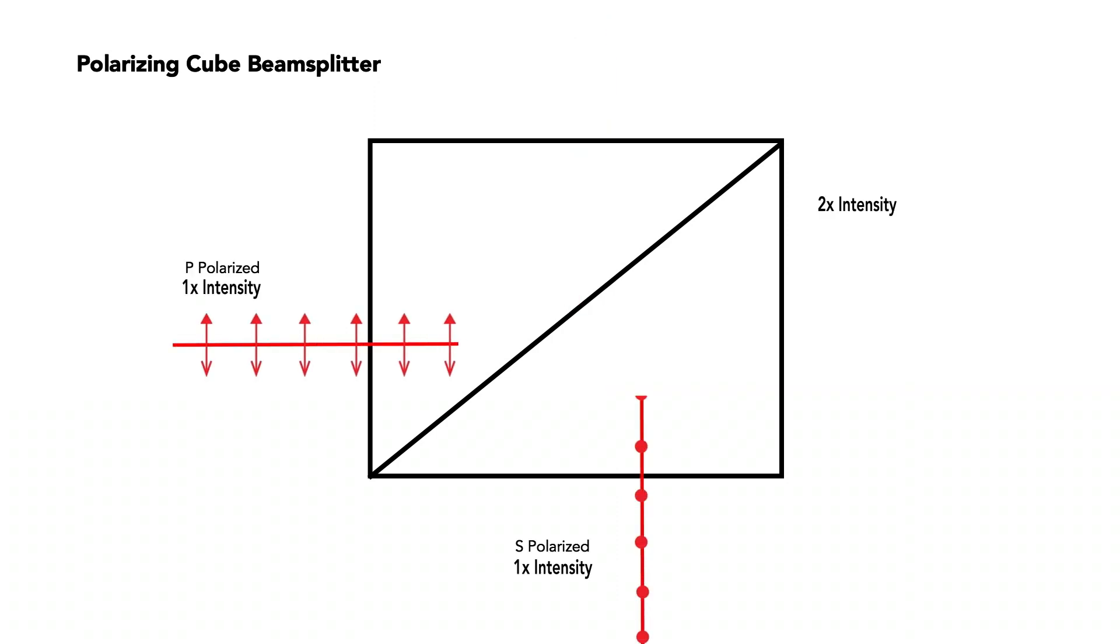Instead of focusing on regions of the spectrum, we can also focus on polarization states. If two beams have the same wavelength and orthogonal polarization states, a polarizing cube beam splitter will combine the light. Similar to a dichroic filter, a polarizing cube beam splitter will transmit one type of light and reflect another. In this case, P polarized light will transmit and S polarized light will be reflected.